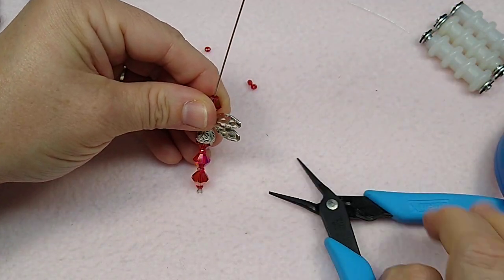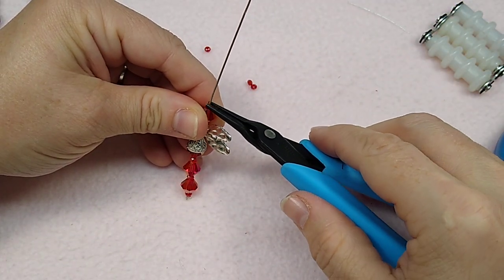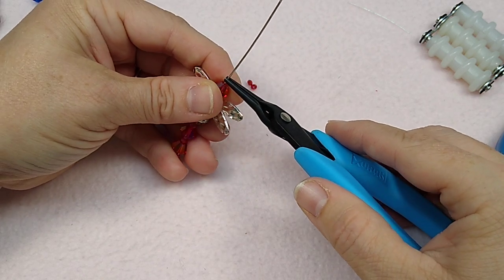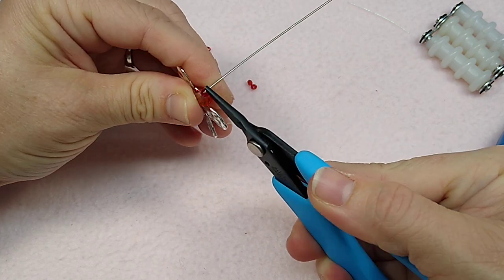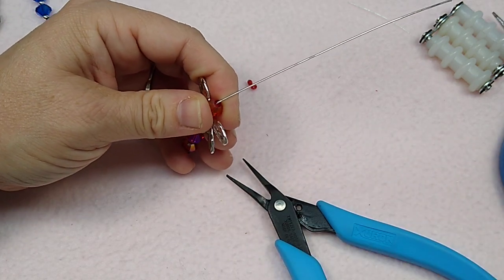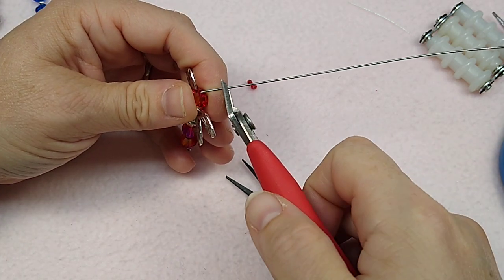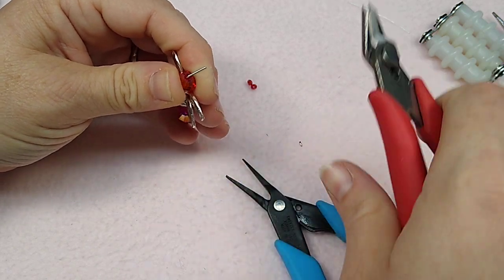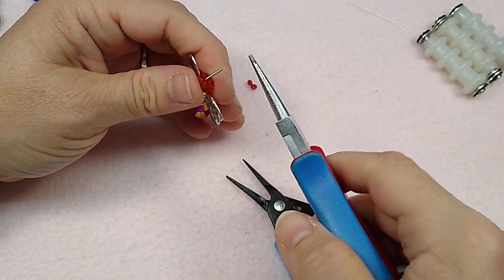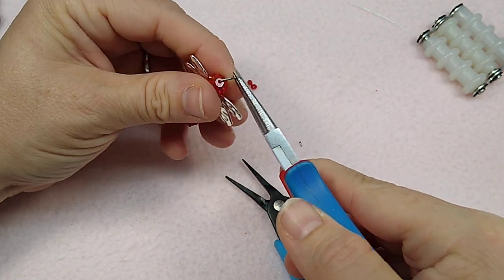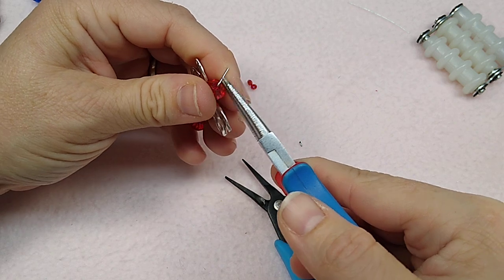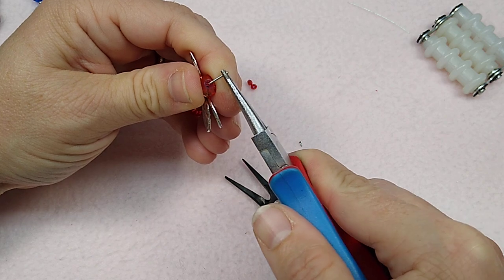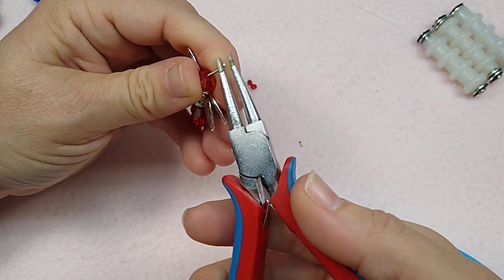I'm going to make the wrapped loop again. This wire actually is pretty thick. I may not do the wrapped loop. I may just do a regular loop. So let me just do a regular loop here. Spinning on me. It's spinning. Okay. Grab it. And just roll it back and make a loop.